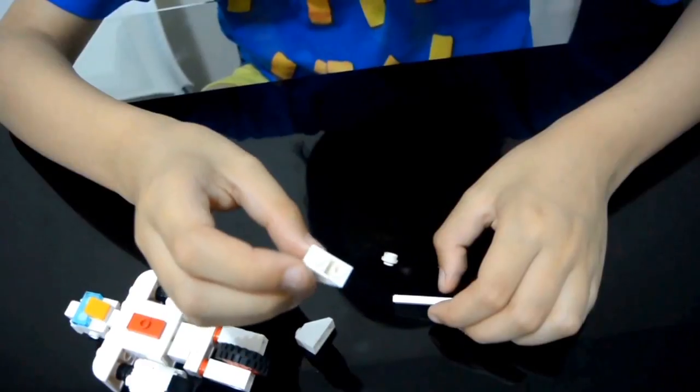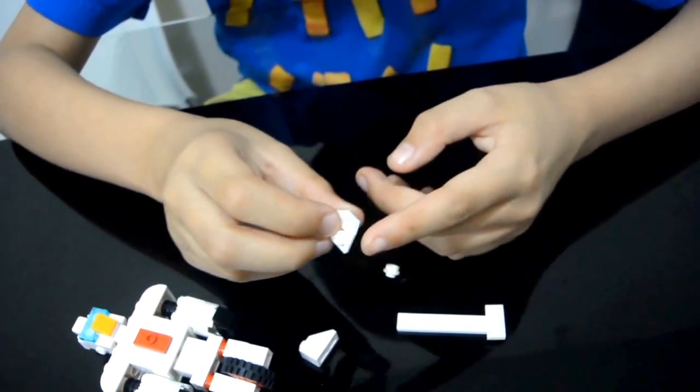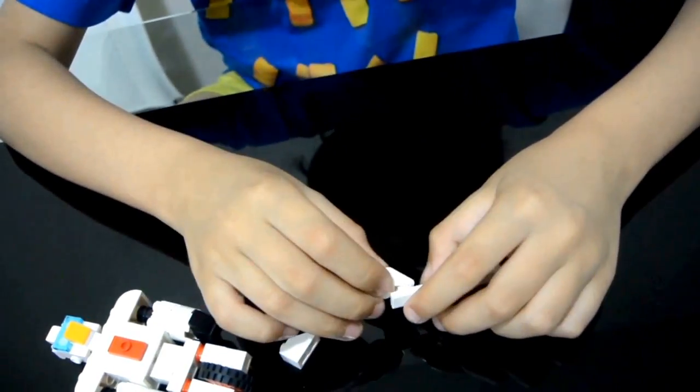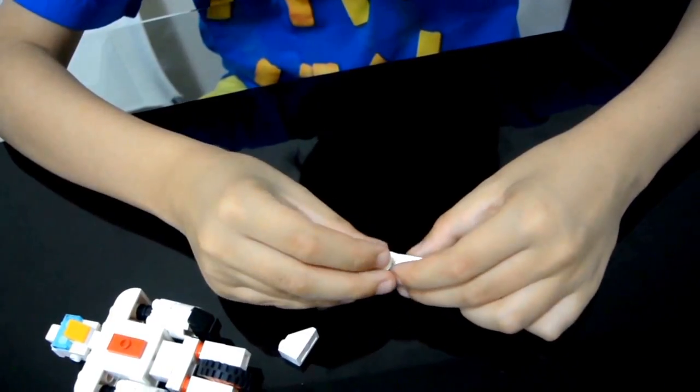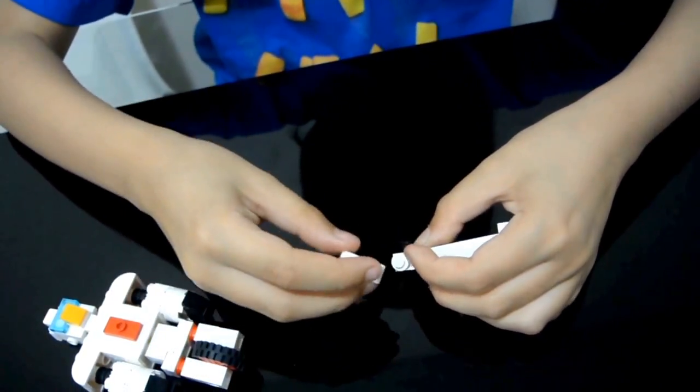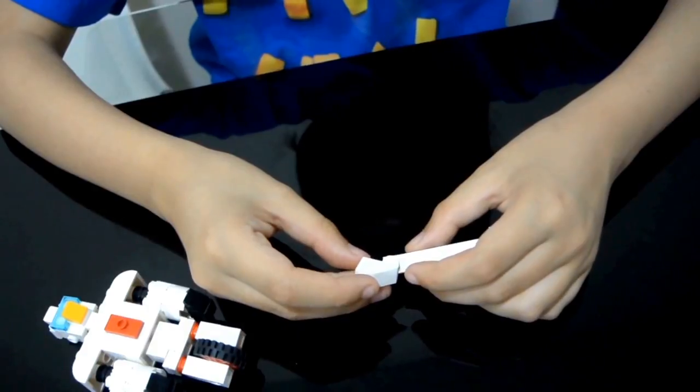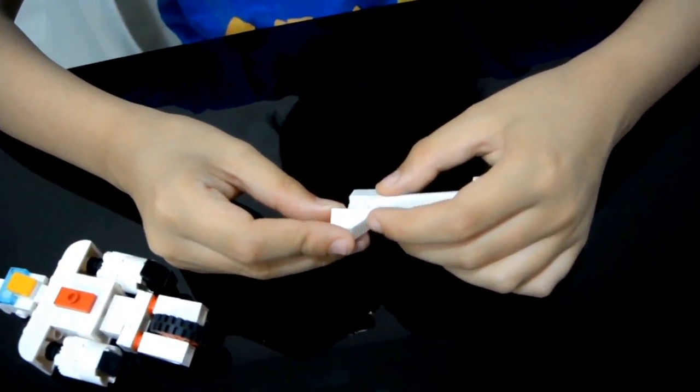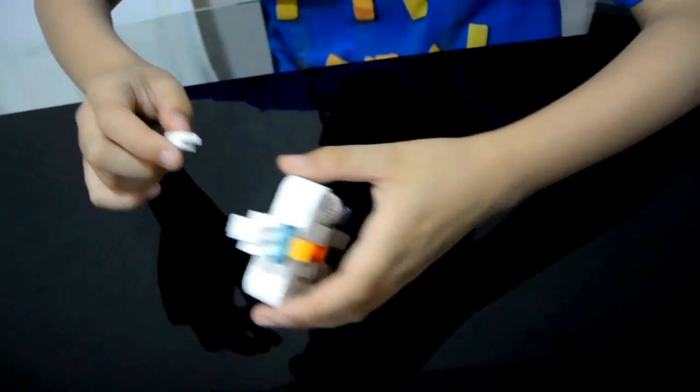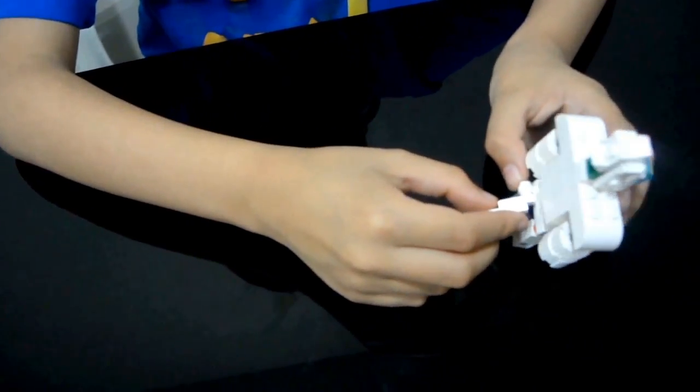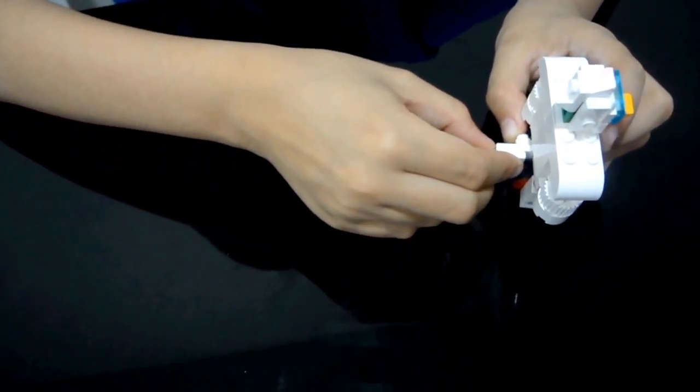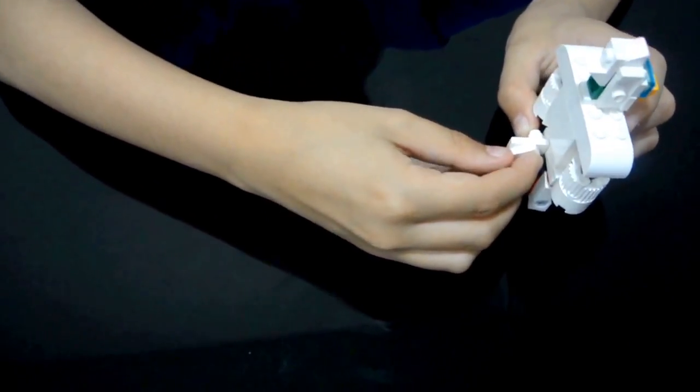Now get a 1x2 brick that has a slope in it. Attach it here. Put a stud here and put another 1x2 brick that has a slope on it, this time at the top. Now attach this onto here and angle this.